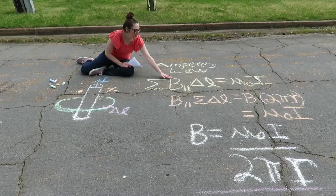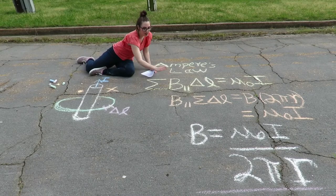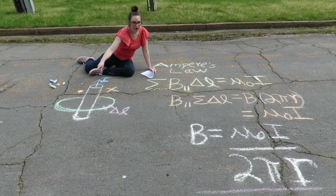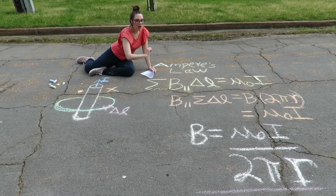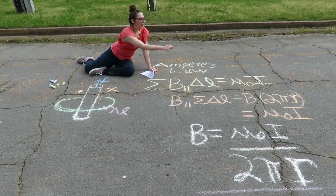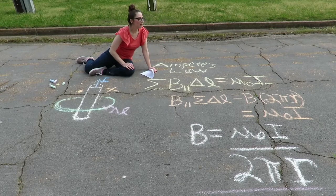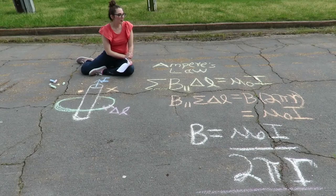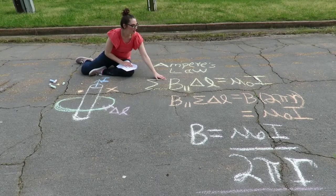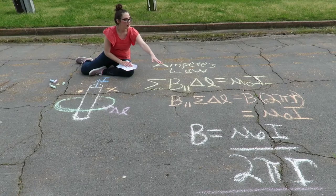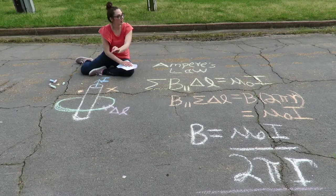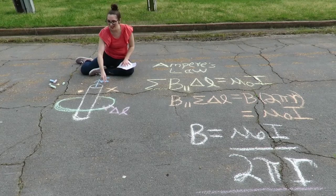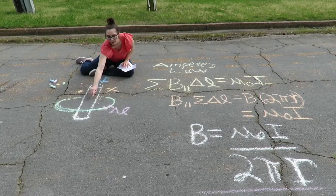If we assume the magnetic field is constant, we can move it out of the summation. Then the parallel component of B times the sum of all little segments equals B times the circumference of the circle, which is 2πr, where r is the radius of the circle — or the distance from the wire.